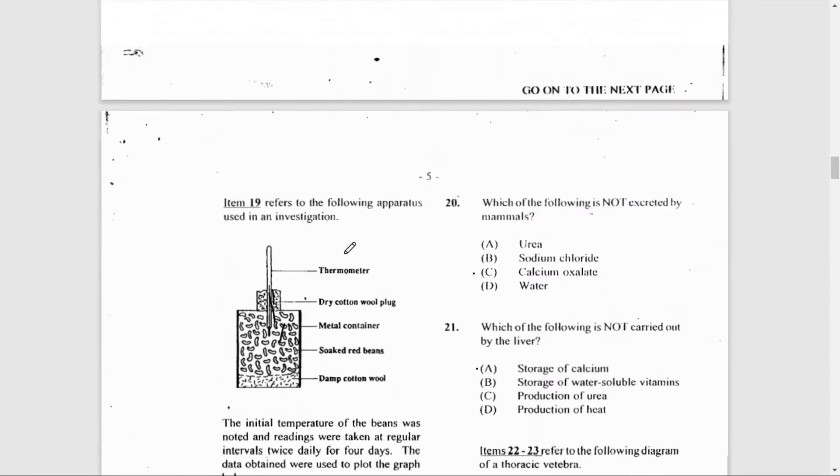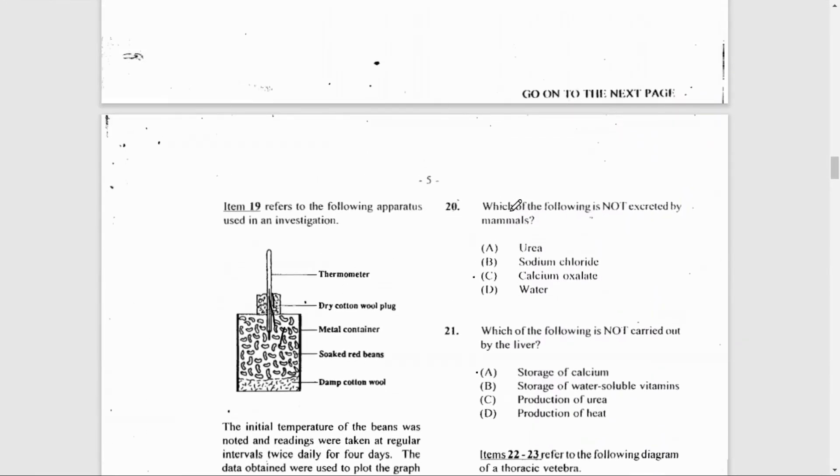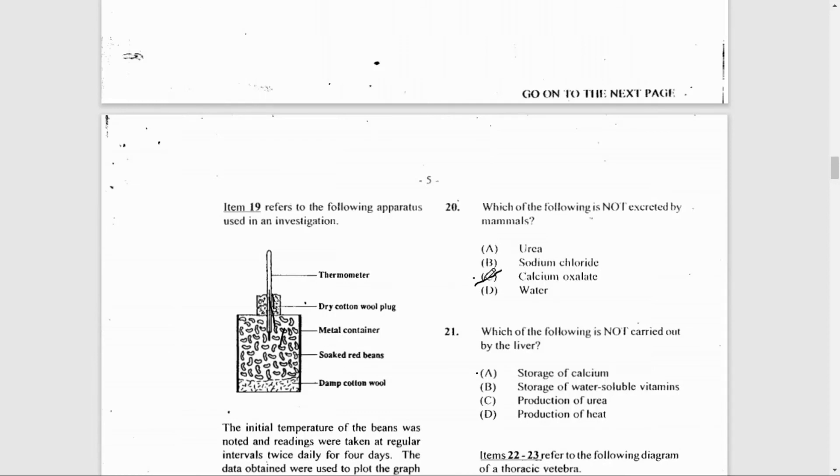The last question for this video, number 20: Which of the following is not excreted by mammals? That would be calcium oxalate. Calcium oxalate is excreted by plants.